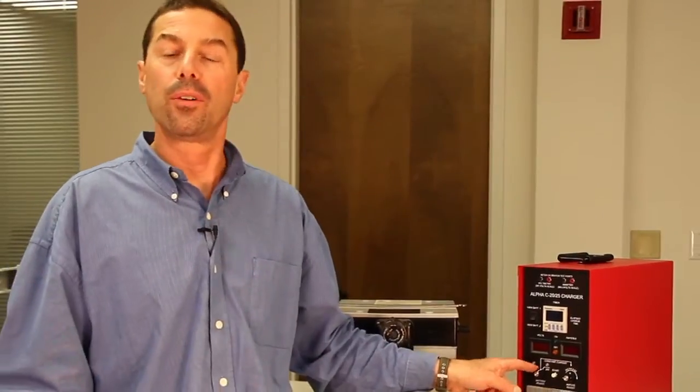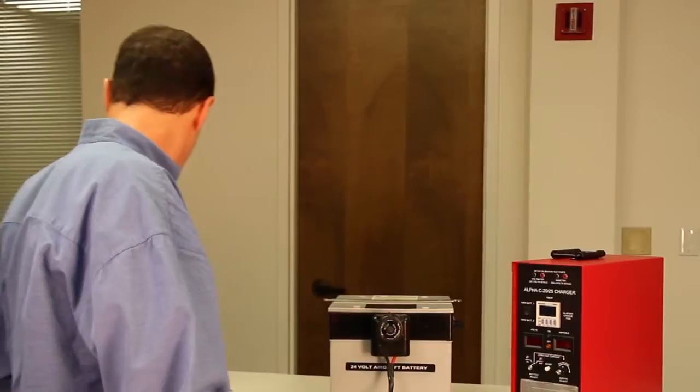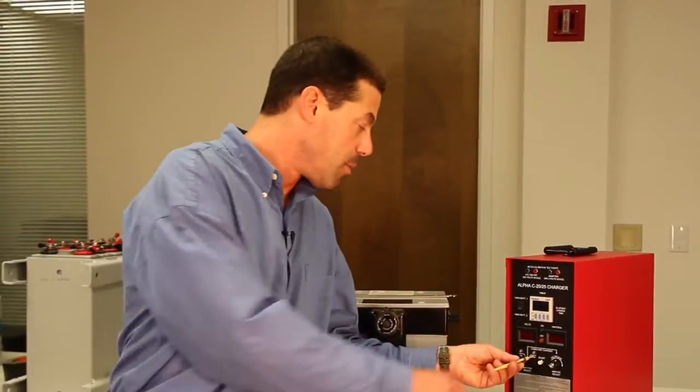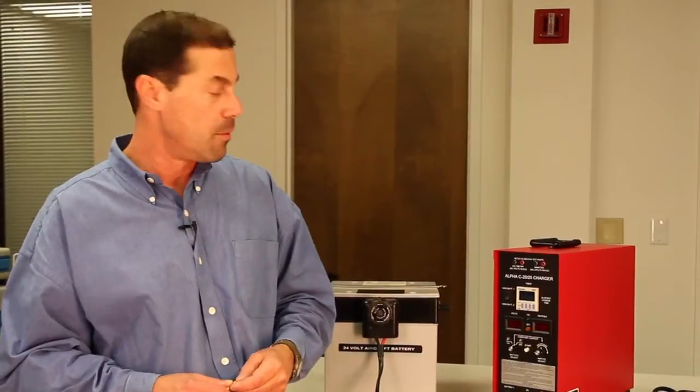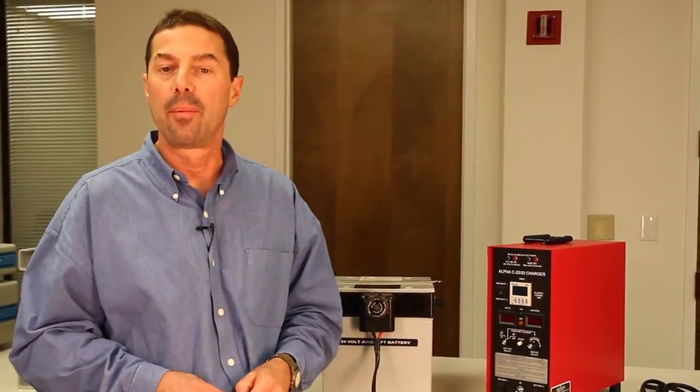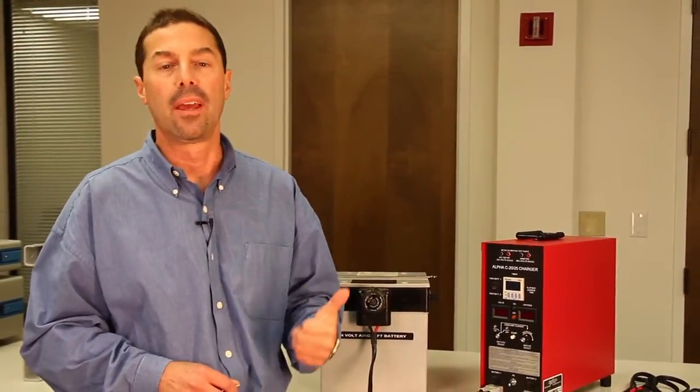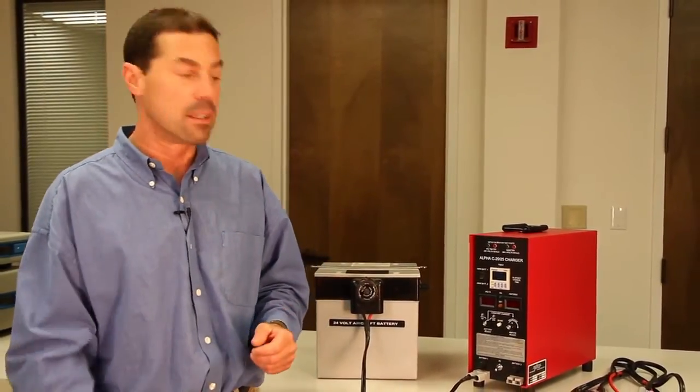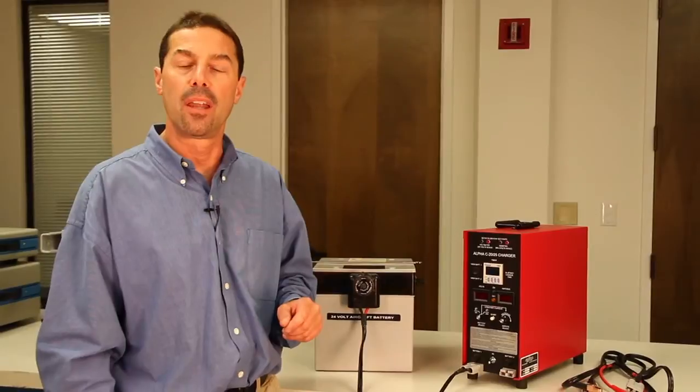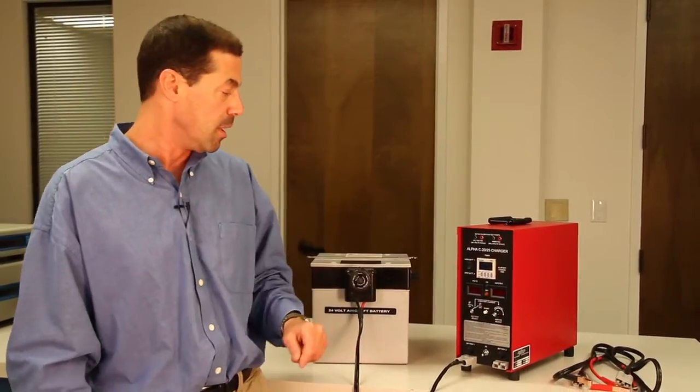You have end voltage trim. It can be done with a small screwdriver or a little tool. This allows you to set the end voltage for any particular battery manufacturer, whether it's a Saft, a Hawker, a Concord, or a Gill. They all have slightly different end point voltages, and this can easily accommodate those.